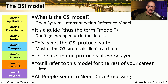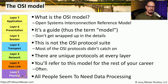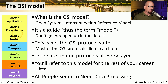Starting at the top of the OSI model — layer 7 — and working down to layer 1: layer 7 is the application layer, layer 6 is the presentation layer, layer 5 is the session layer, layer 4 is transport, layer 3 is network, layer 2 is the data link layer, and layer 1 is the physical layer.